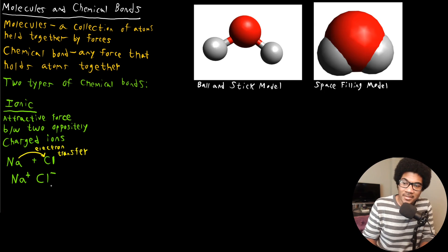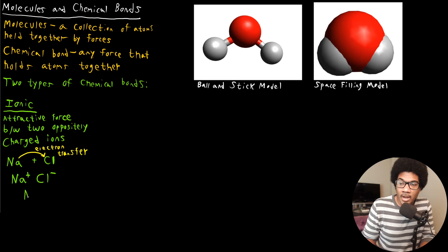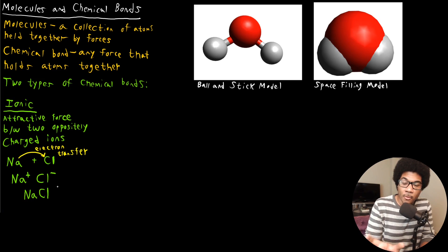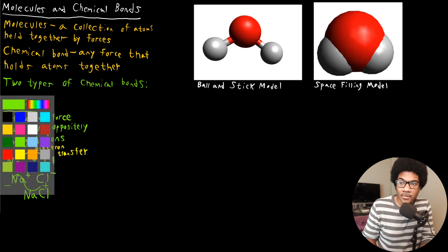Since sodium has a net positive and chlorine has a net negative, those are going to cancel out to give you an overall neutral charge. So when we write sodium chloride, we typically just say NaCl as the formula, because it doesn't have a net positive or negative charge, but it's held together by these ionic bonds, this electrostatic force.